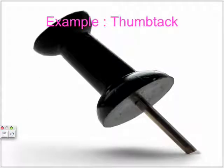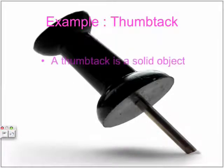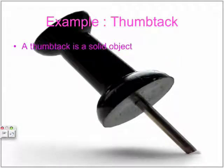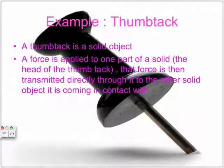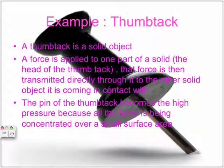An example is a thumbtack. A thumbtack is a solid object. A force is applied to one part of the solid, which is the head of the thumbtack. That force is then transmitted directly through it to the other solid object it is coming in contact with. The pin of the thumbtack becomes the high pressure because all the force is being concentrated over a small surface area.